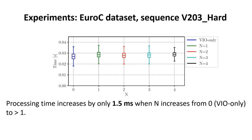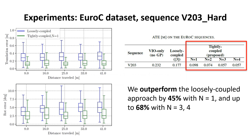We define the processing time as the duration between the time at which the front end receives an image and the time at which its optimized pose is available from the sliding window optimization. Thanks to the efficient formulation of the global residuals, increasing the value of N only slightly affects the processing time. Our method outperforms the state-of-the-art loosely coupled on every sequence of the EUROC dataset. In particular, for the sequence shown on the current slide, the absolute trajectory error improves from 45% when N is equal to 1, to 68% when N is equal to 3 and 4.